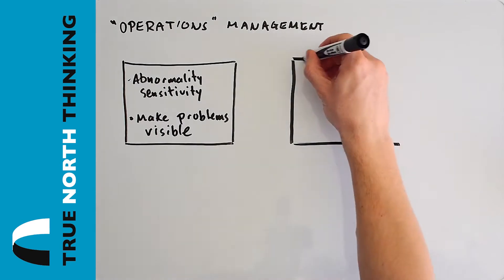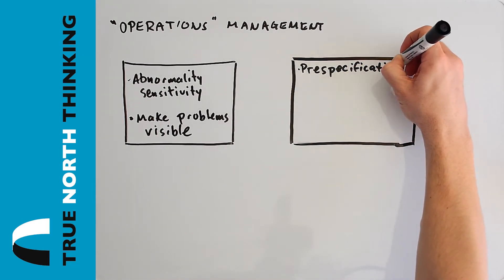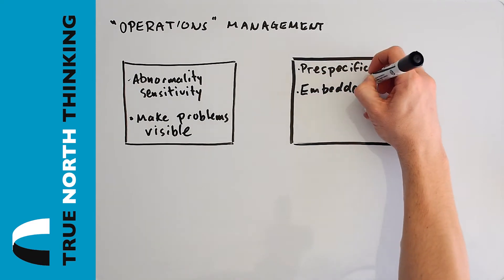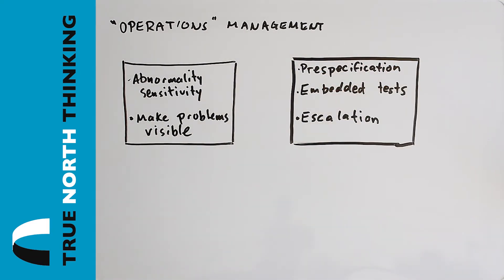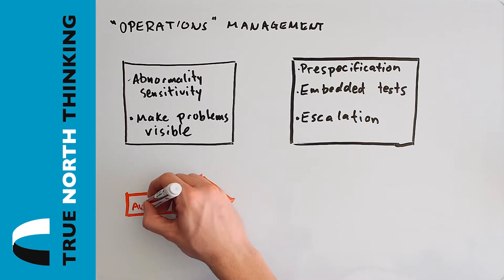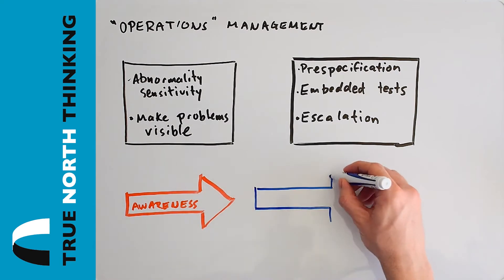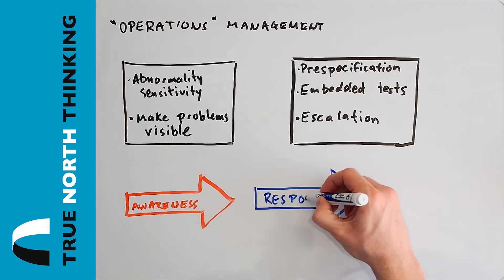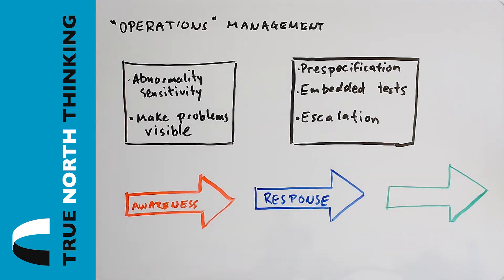We also want to build into our system something that can help raise the alarm that something is wrong and escalate that problem to someone that can help. To do this, we need very clear criteria on what is acceptable — we call this pre-specification — and a simple way to tell if the current situation is good or bad, called an embedded test. Lastly, we want the system to help us become aware of problems and reduce our reaction time to them. We call this escalation.